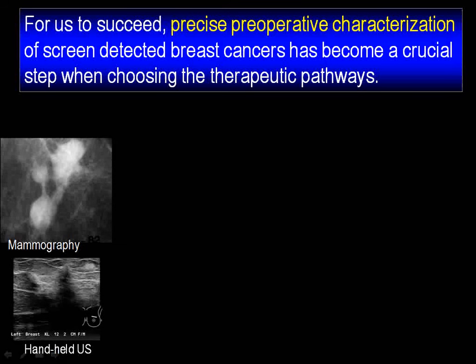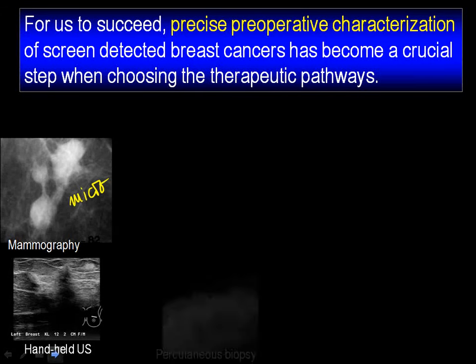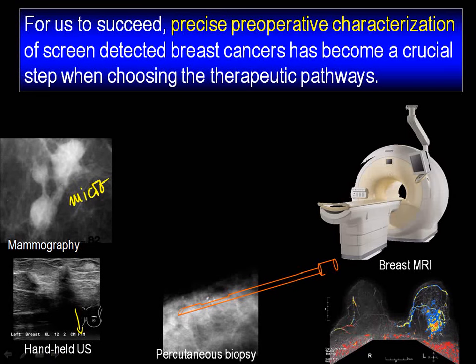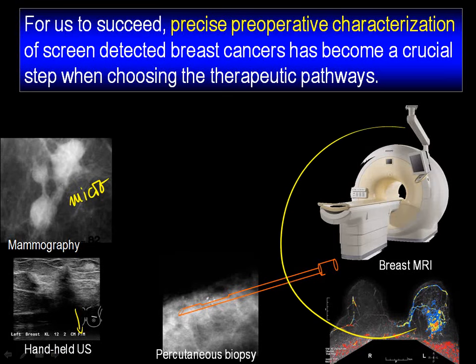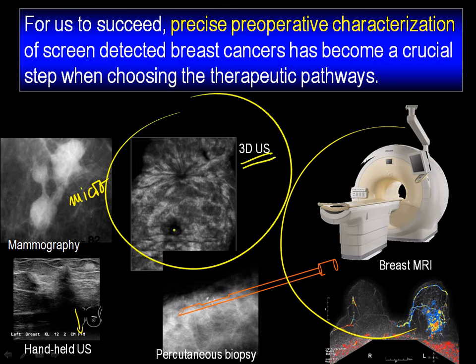We now have microfocus magnification mammography, spot compression, and the combination of the two. We have ultrasound, which everybody really likes, and then the different interventional methods — fine needle aspiration, core biopsy, mammotome, and larger-bore needle biopsies. But it's very important to talk about the importance of breast MR, and also the automated breast ultrasound.